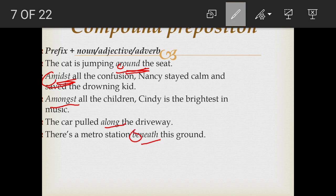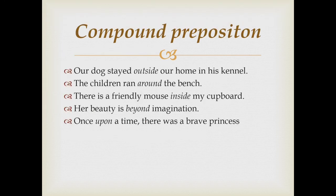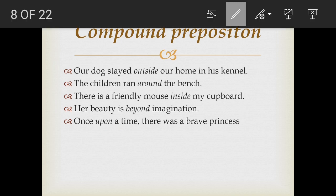Let us see some more examples of compound prepositions. 'Our dog stayed outside our home in his kennel' — outside is the compound preposition, out and side joined together. 'The children ran around the beach' — around is the preposition. 'There is a friendly mouse inside my cupboard' — in plus side makes inside. 'Her beauty is beyond imagination' — beyond. 'Once upon a time there was a brave princess' — upon, up and on joined together. So these are called compound prepositions.